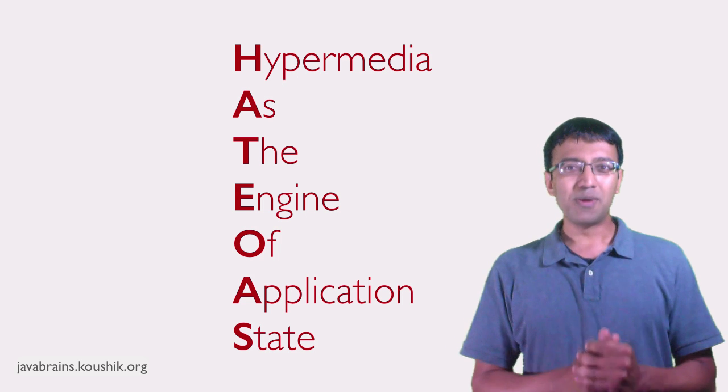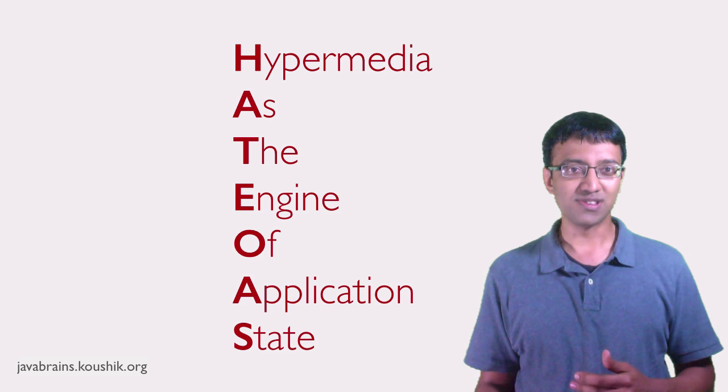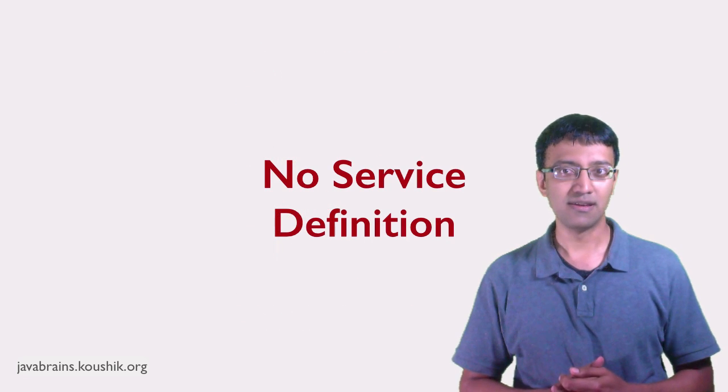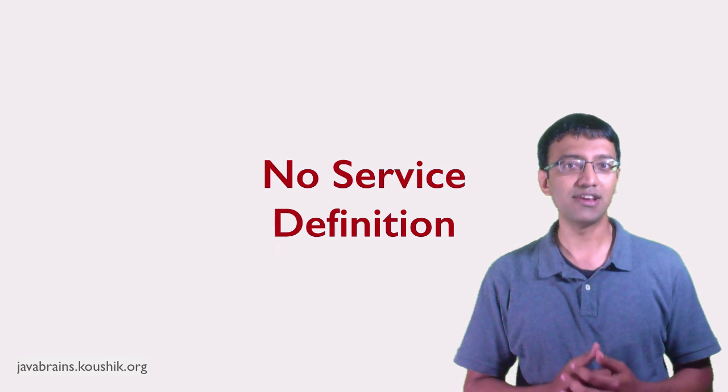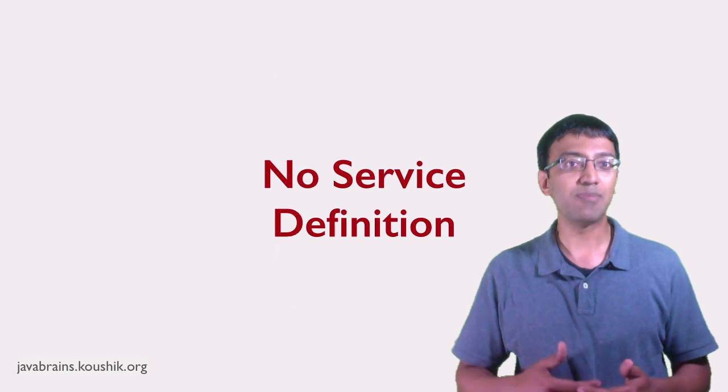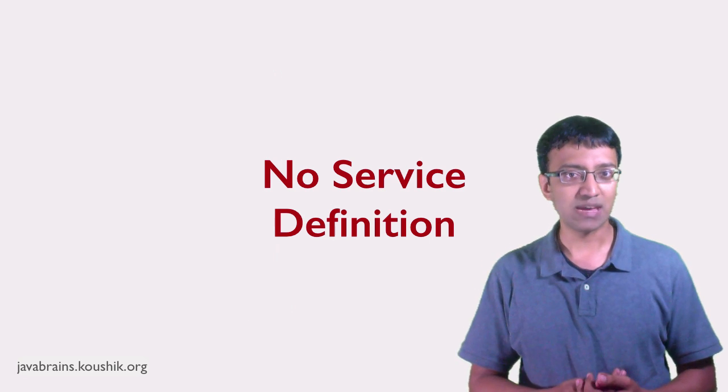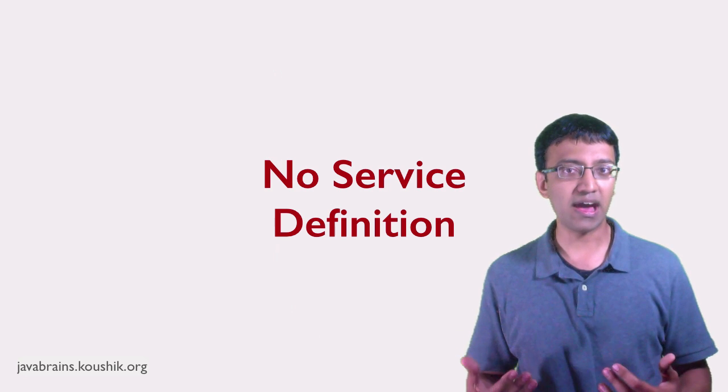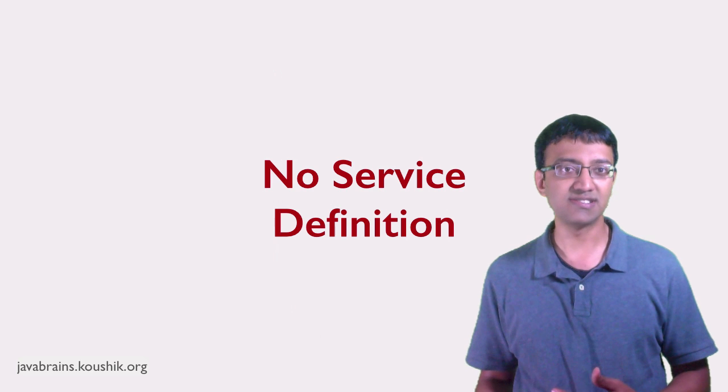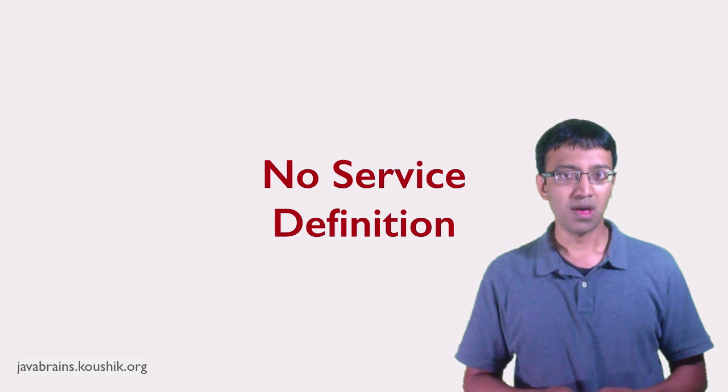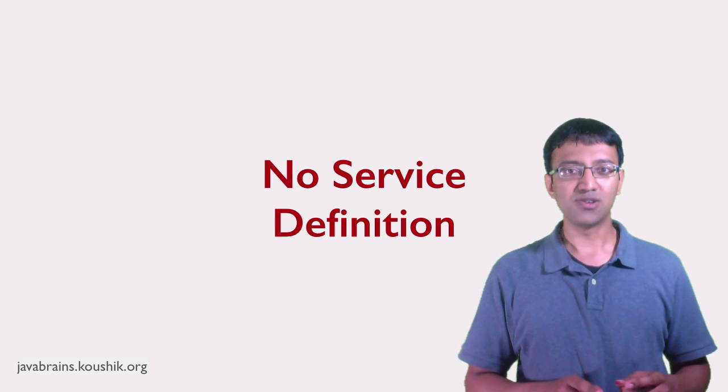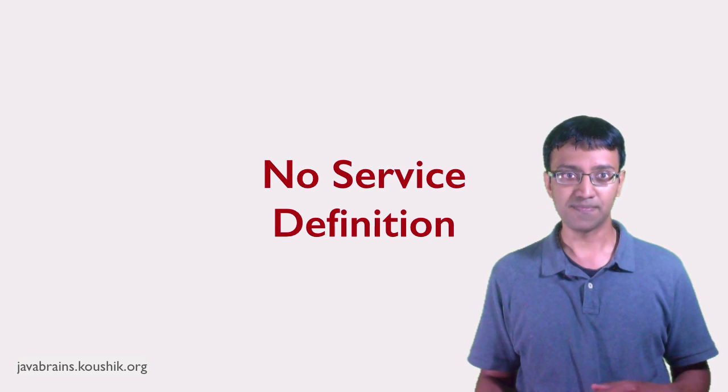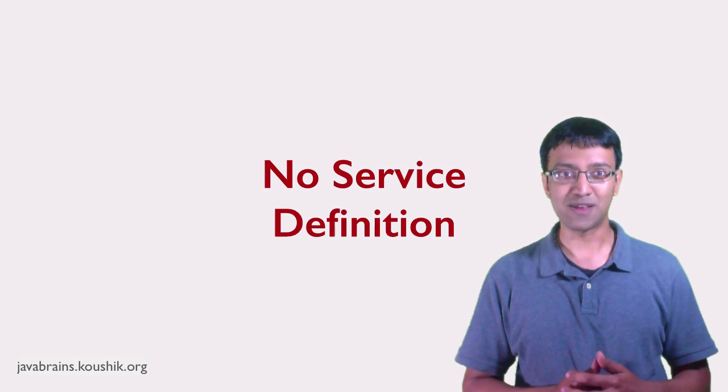So, maybe you remember, I mentioned in the first video in the series that there is no service definition specification for REST APIs. There's no formal document that really documents the API itself. Most REST APIs have help pages that explain what the API URIs are and what the operations are that are supported. I also mentioned in the first video that the best REST APIs don't even need any documentation. And now I'll explain what I mean by that.